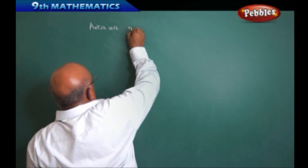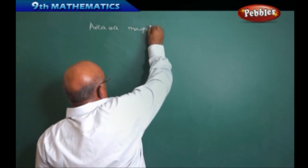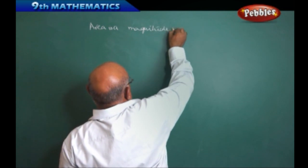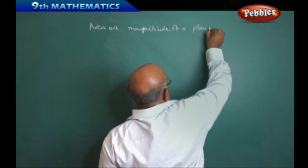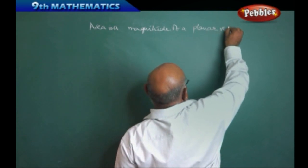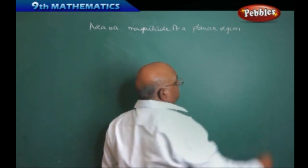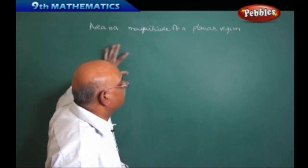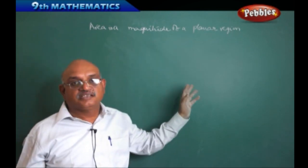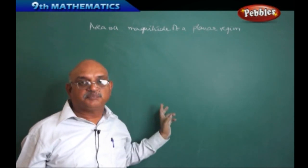Area is a magnitude of a planar region. Just now we have discussed about the planar. Planar means the total complete covered by so many, the curve that is called a planar region.